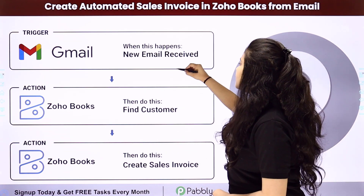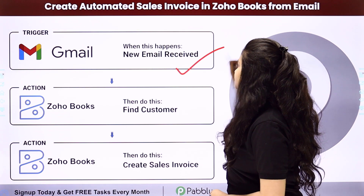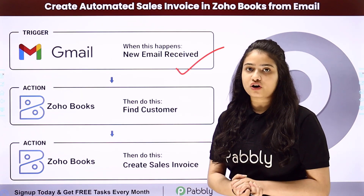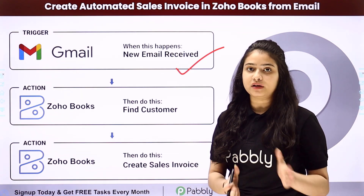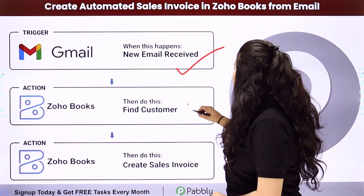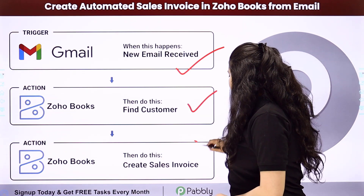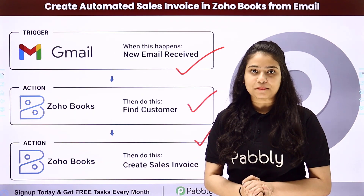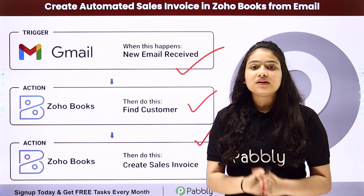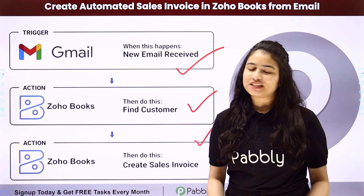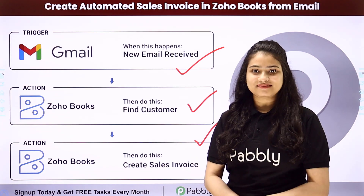We are going to use an email parser in our trigger to fetch the email details from Gmail, and then use Zoho Books in our action step to connect all of them and automate this entire process. Let me take you to my screen to learn this step by step.